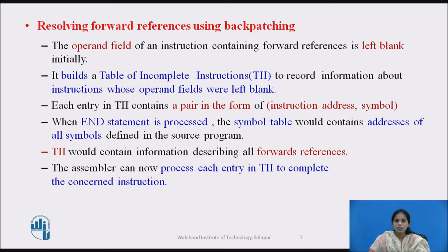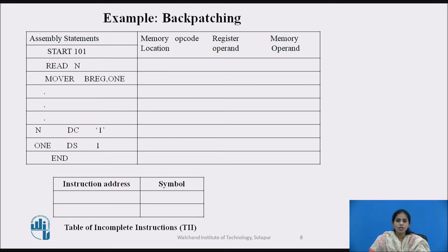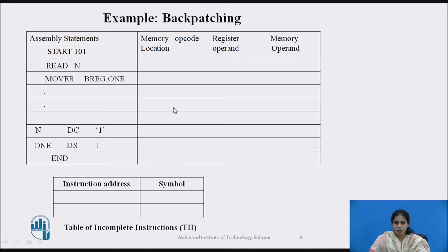The assembler then processes each entry in the TI table to complete the concerned instruction. Consider this example: on the left-hand side are the assembly statements, and on the right-hand side we generate the machine code. The program starts at 101, with instructions: READ N, MUV RB comma 1, N DC 1, A DS 1, and END.